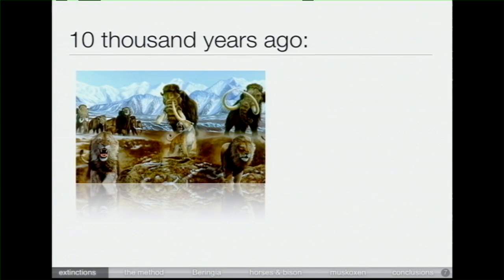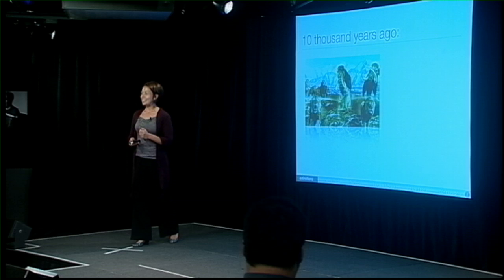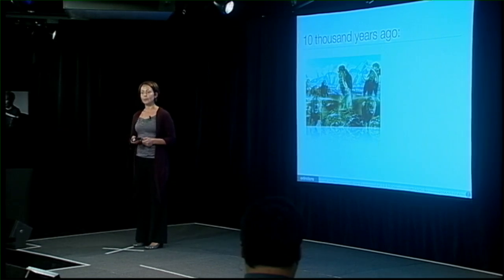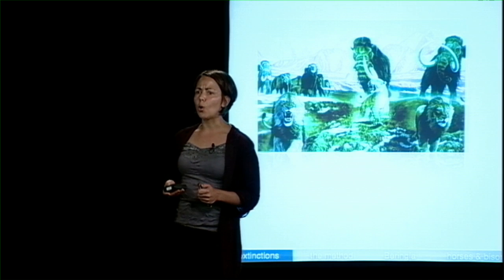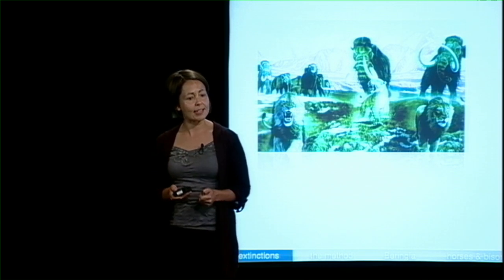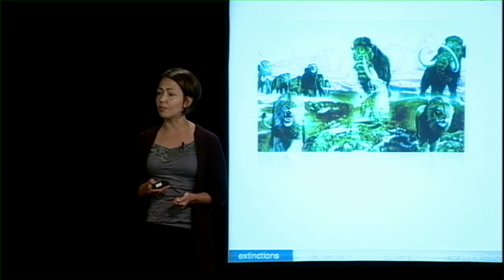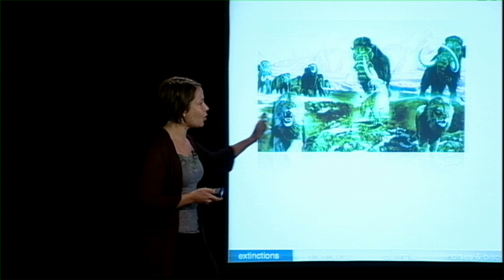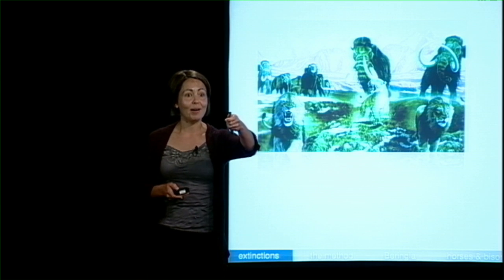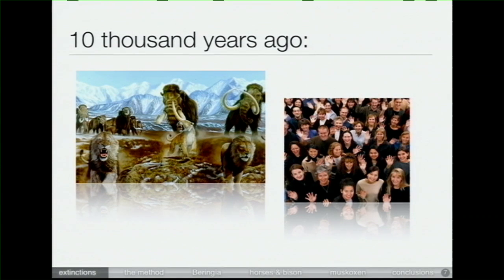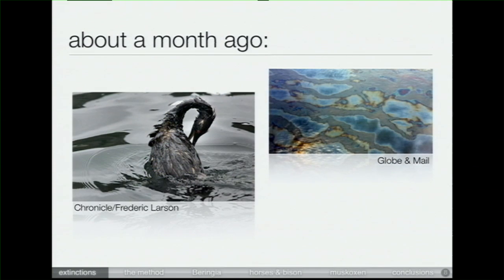Starting about 10,000 years ago, we're going through what many people are calling the sixth mass extinction event in our planet's history. It's often called the megafaunal mass extinction, at the end of the Pleistocene and the beginning of the Holocene — which is when we live right now. And who knows what's causing this one? Is it us? I think if we look at the evidence we're accumulating, we can say that we are having quite a tremendous impact on our environment.